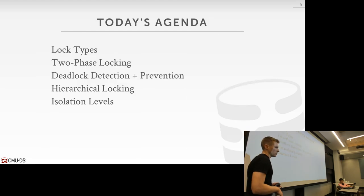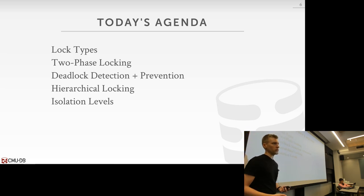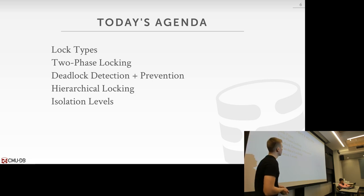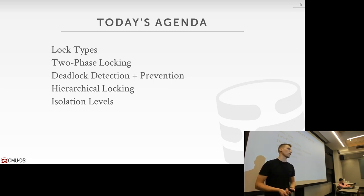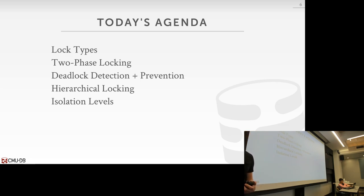Today we're going to look at lock types first — starting with two basic lock types — then get into our first proper concurrency control protocol, two-phase locking. We'll talk about how we reason about deadlocks and how to solve that problem. Then we'll introduce hierarchical locking, which allows us to take fewer locks and be more efficient. Isolation levels are a mistake on this slide — we won't get to those today; that'll be next lecture.